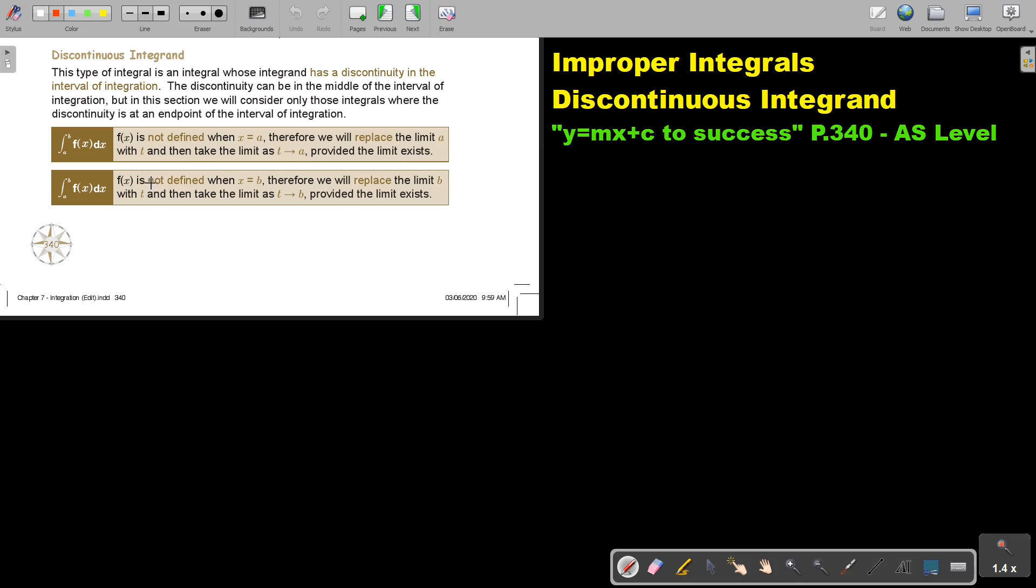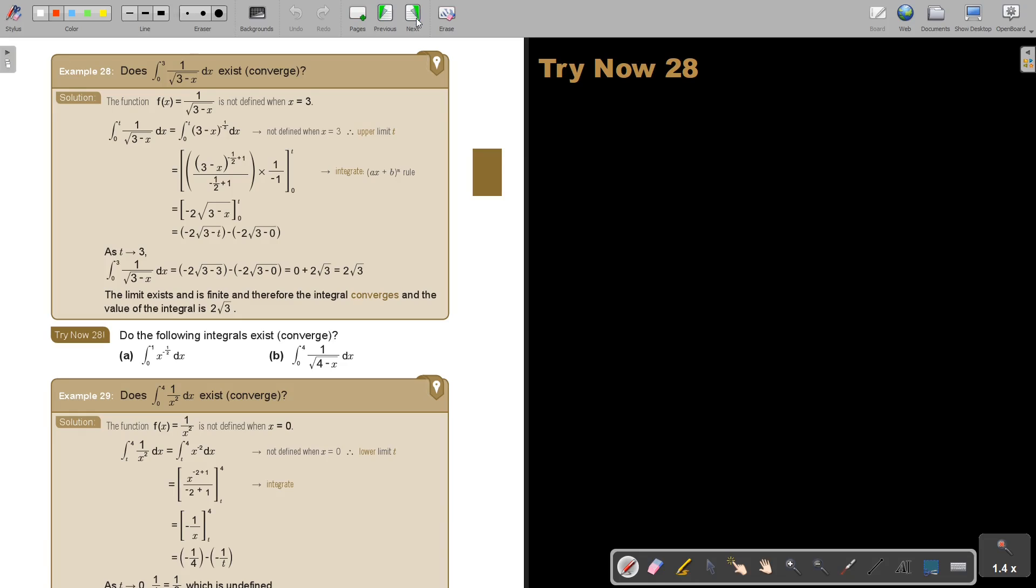I'll show you now. If f(x) is not defined when x equals B, therefore we will replace the limit B with T and then take the limit as T striving to B, providing the limit exists. It's usually when it's division by zero that this comes into account. Let's just check the example.